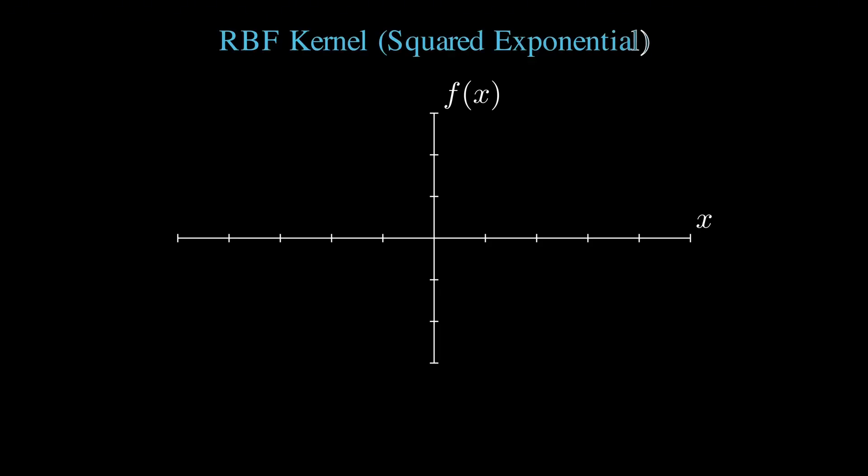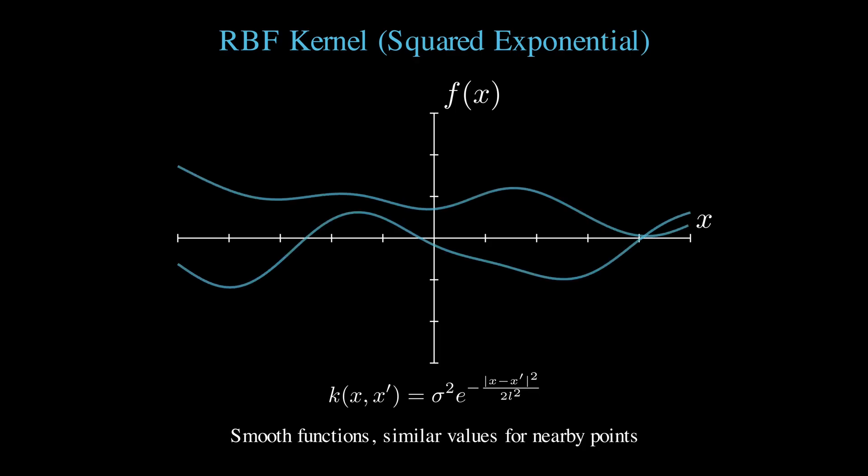Now let's talk about kernel functions and how they relate to Gaussian processes. Basically, the kernel determines what kinds of functions we can represent. Let me show you three important kernels one by one. First, let's look at the RBF kernel, also called the squared exponential kernel, which gives us beautiful smooth functions that vary gradually with sharp changes, where points that are close together are highly correlated, while points that are far apart have almost no influence on each other. The formula is k(x, x') = σ² × e^(-(|x - x'|²) / (2l²)). This kernel works perfectly when you expect your underlying function to be smooth and continuous.